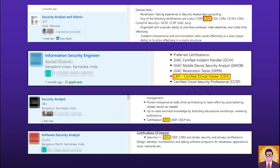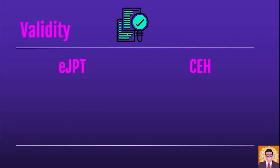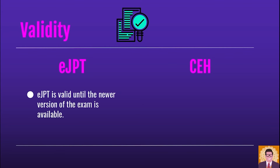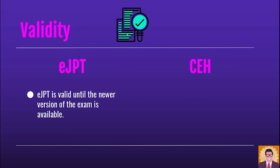Moving on to our third aspect: validity. Validity of a certificate is an important aspect to consider when choosing a certification. eJPT is valid until a newer exam version is released, whereas CEH has a definite timeline of three years from the date of issue. The present eJPT version is 1.0 and the present CEH version is 11. If eJPT releases a newer version, your current certificate would become invalid.